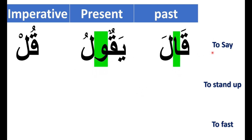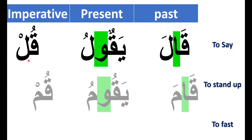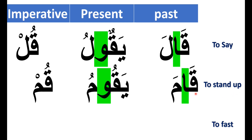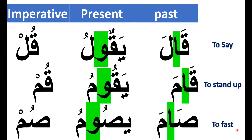Let's begin with the verb to say. In the past tense: قال, he said. In the present tense: يقول, he says. In the imperative tense: قل, say. To stand up: قام, he stood up; يقوم, he stands up; قم, stand up. To fast: صام, he fasted; يصوم, he fasts; صم, fast.